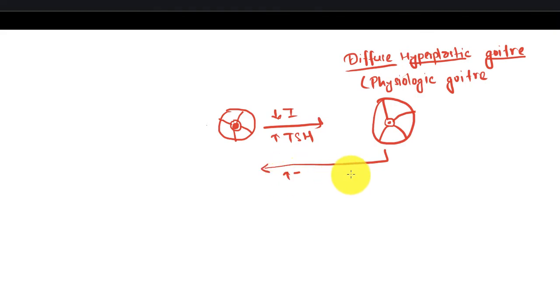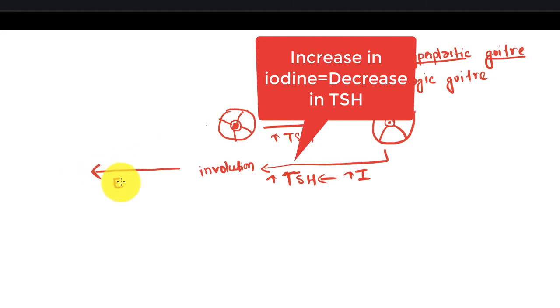It occurs when there is increased demand for iodine. When you give the patient iodine, there will be a decrease in TSH.